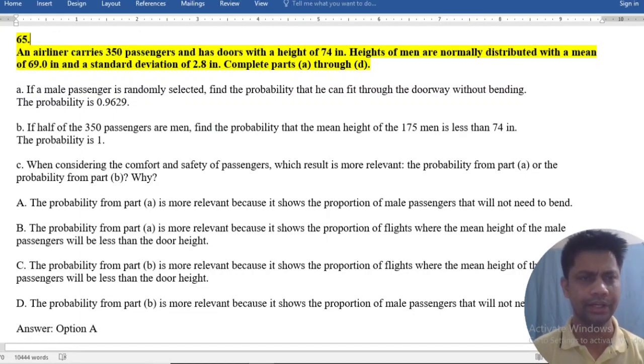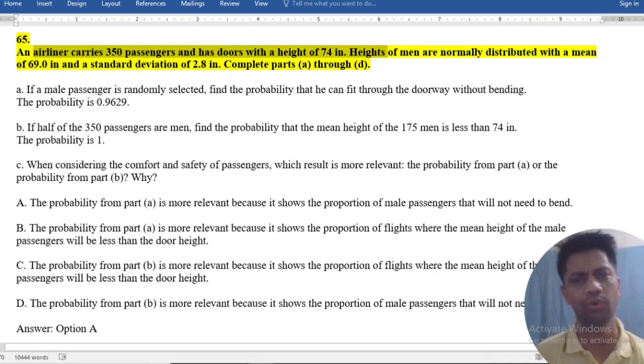An airliner carries 350 passengers and has doors with a height of 74 inches. Height of men is normally distributed with mean 69 and standard deviation of 2.8. Complete parts A through D.